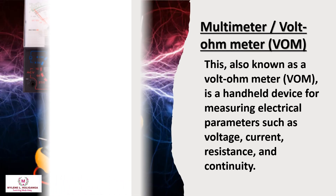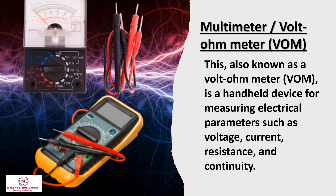The multimeter, also known as a volt-ohm meter or VOM, is a handheld device for measuring electrical parameters such as voltage, current, resistance, and continuity.